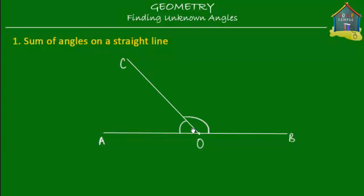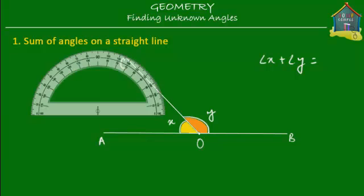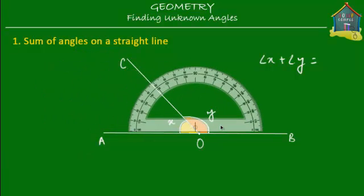The two angles formed on the straight line AOB are: this angle, which is angle AOC — let's call it X, and fill it in yellow — and the second angle, COB, which we'll call Y and fill in another color. So what I want to find out is what X plus Y is equal to. We'll see that X plus Y is equal to 180 degrees. All we do is take a protractor and measure the angles.